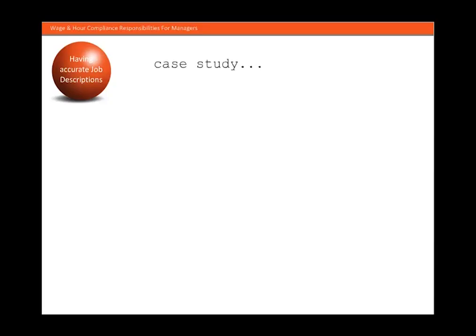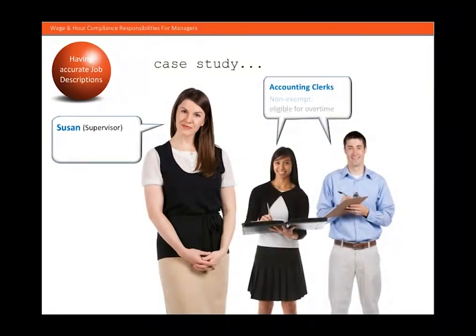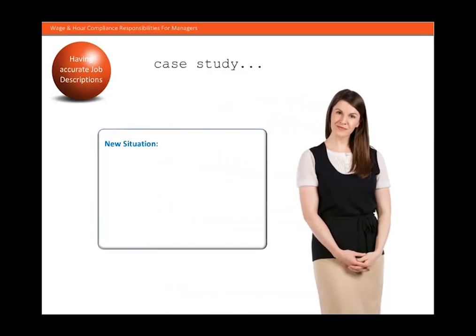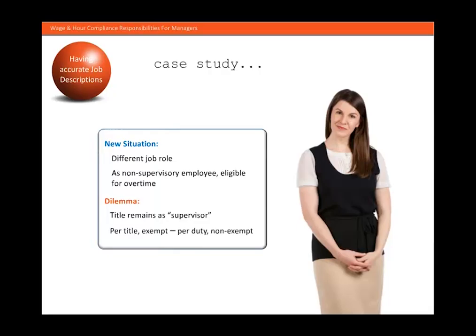As a manager or supervisor, you are responsible for maintaining accurate job descriptions. Let's take a look at this case study. Susan supervised two accounting clerks who were eligible for overtime. Because Susan supervised two full-time employees, her position was considered exempt and not eligible for overtime. Due to a reorganization, the accounting clerks were reassigned to other departments. Susan remained in her current job and was assigned some of the accounting duties performed by the previous clerks. Because Susan's job no longer includes supervisor responsibilities, she became eligible for overtime. But her job title was never changed, so her record indicated she was not eligible for overtime. If Susan worked any overtime in her new role, she would not receive overtime pay because her job classification was based on her previous role.